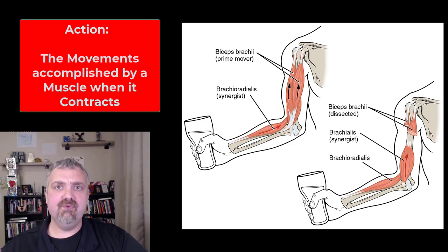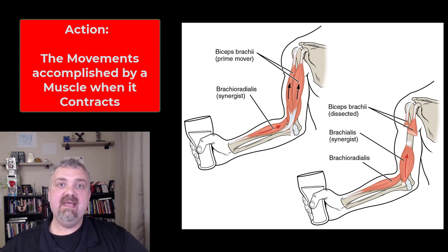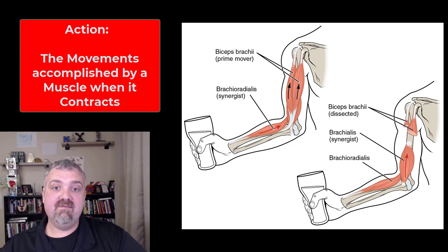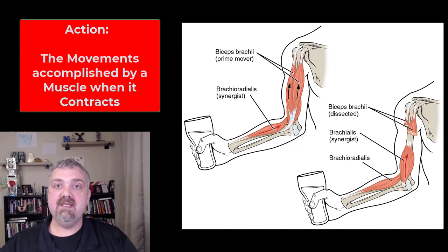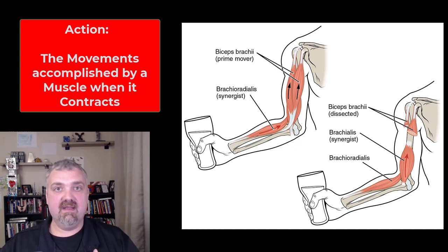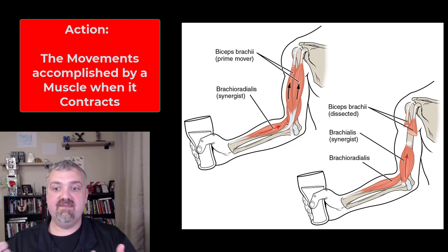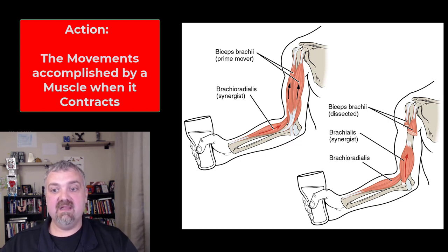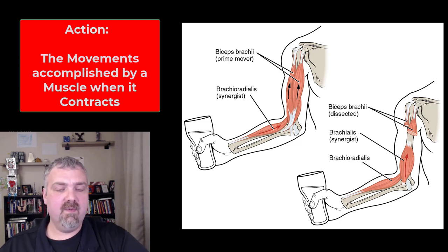And then we have action — what does the muscle do? The biceps brachii is going to flex the elbow, but it also is a supinator, so it actually has two key actions. Some muscles have a whole lot of actions, some just have one. You're going to see that a lot of times several muscles are going to have the same actions. You can even see here on this one image the biceps brachii, the brachioradialis, and the brachialis are all involved in elbow flexion.